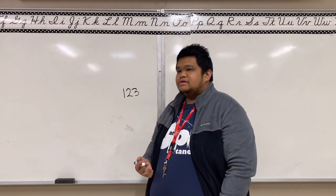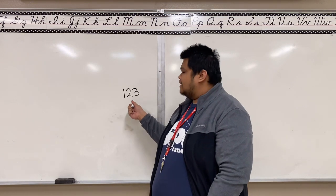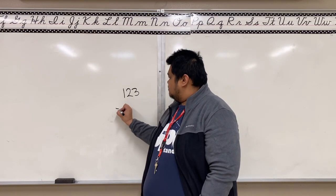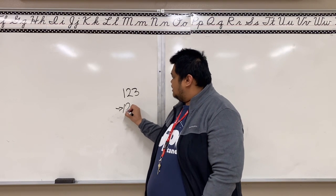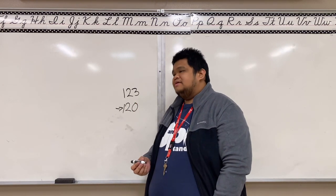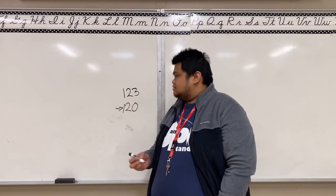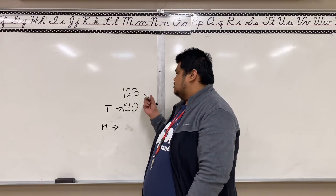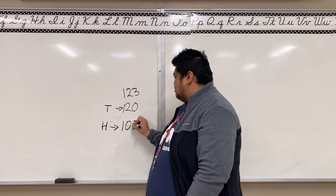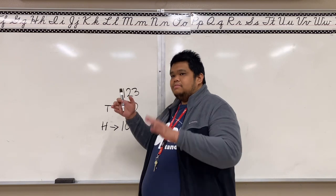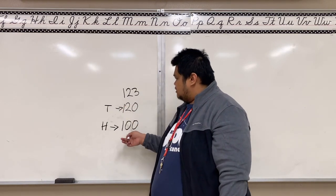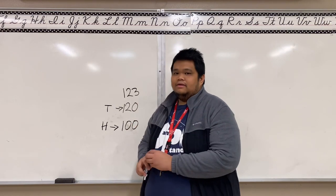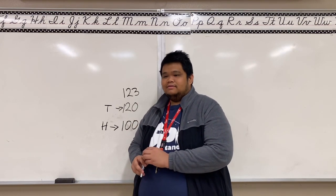For example, 123. What if the question is round this to the nearest tens? It's gonna be 120. But what if the question is round off to the nearest hundreds? This is tens, this is hundreds. It's gonna be 100 because 2 is in the lower part of the number range. And if you convert it to the nearest tens, it's gonna be 120. Understood?